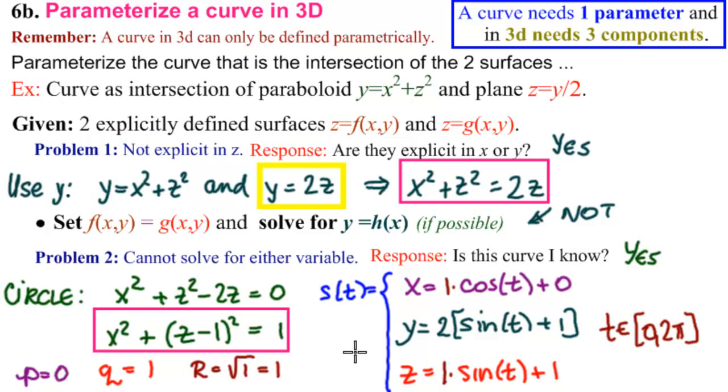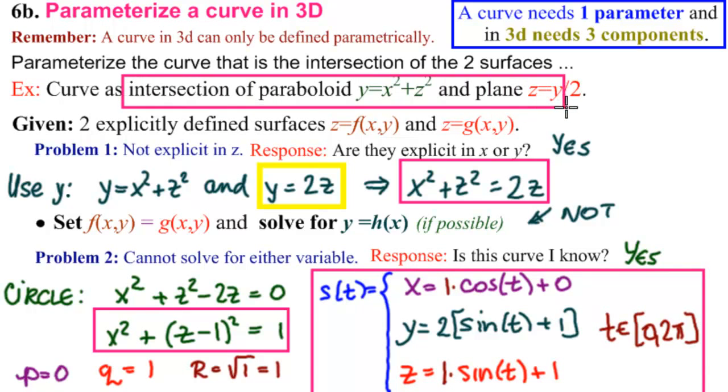It wasn't that hard. We just had to say to ourself, can't do it in z? Can we do it in x or y? Can't solve for a variable? Can't get an explicit? Is it a curve I know? Yep, it's a circle. So here is our parametrization of the intersection of the paraboloid and the plane. Let's go check it.